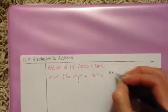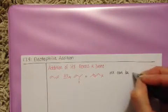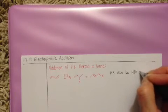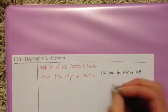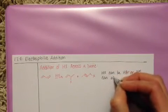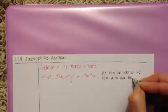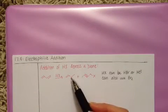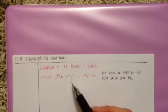In this reaction, HX can be either HBr or HCl. And you could also do this reaction with Br2, in which case you'd be adding two bromines. So you'd be adding a bromine here and a bromine here for this product.